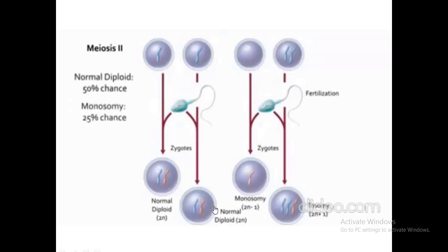In different exams, they ask what kind of cells are produced in Meiosis I versus Meiosis II after chromosomes fail to separate properly. I hope you have understood what happens in Meiosis I and Meiosis II when chromosome non-disjunction occurs.